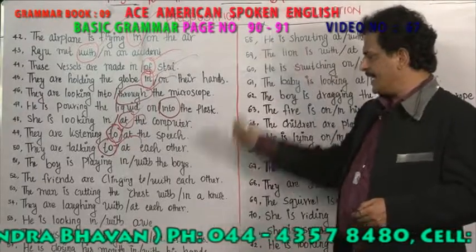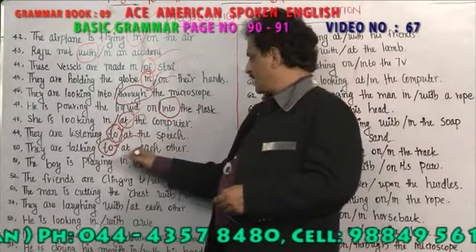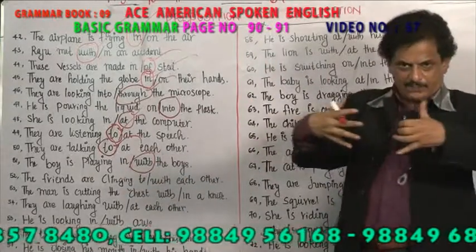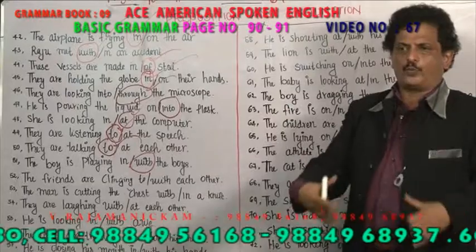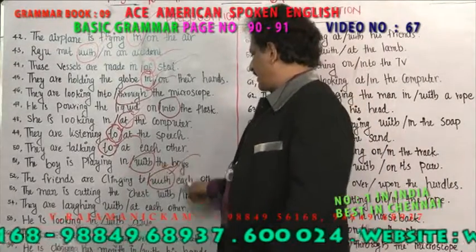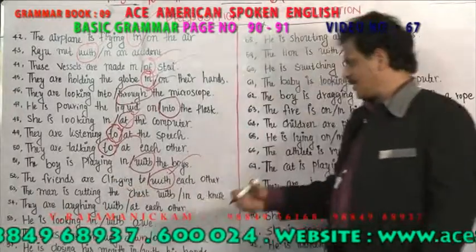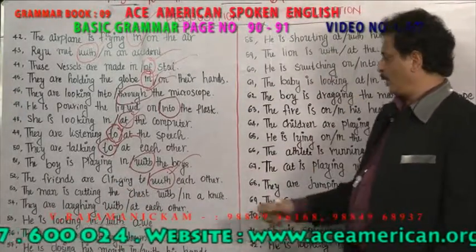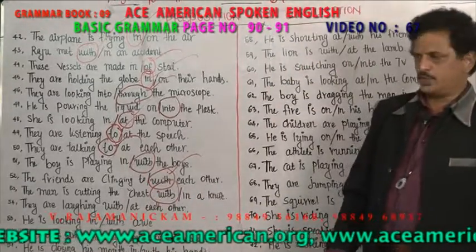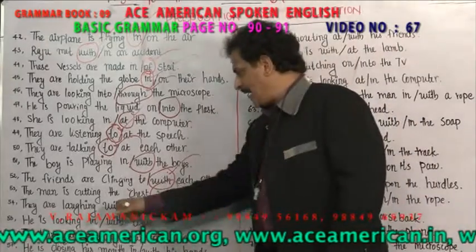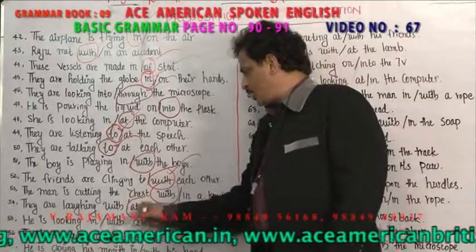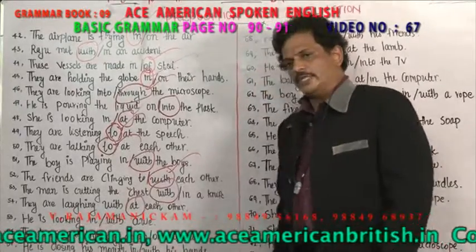The boy is playing with the boys or in the boys? 'With the boys' — 'with' means something together. The friends are clinging to each other or with each other? 'With each other' is correct — 'with' is used to have connectivity. The man is cutting the chest with a knife or in a knife? 'With a knife' — 'with' is used with an instrument.